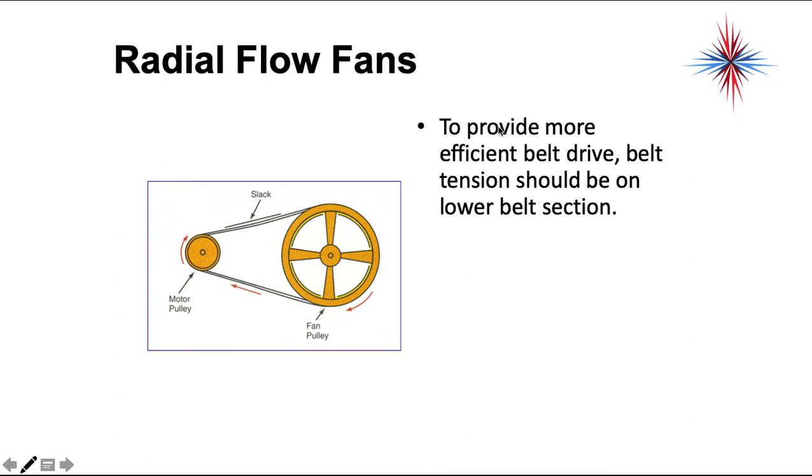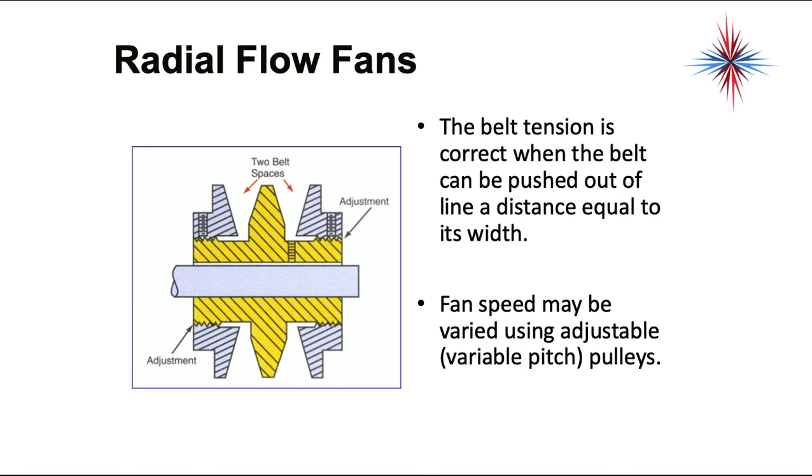To provide more efficient belt drive, belt tension should be on the lower belt section. We want the tension to be lower, but there should be some slack. You don't want very heavy slack because the belt can wear out and will not work properly. Belt tension is correct when the belt can be pushed out of line a distance equal to its width. If you have a quarter inch belt, you should be able to push it out of line a quarter inch. Fan speed can be varied using adjustable or variable pitch pulleys.